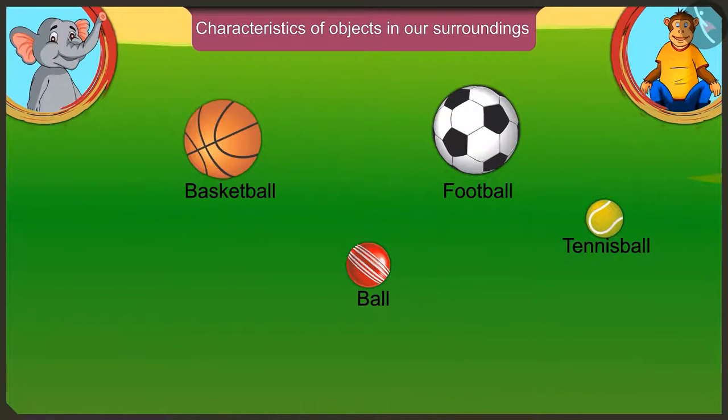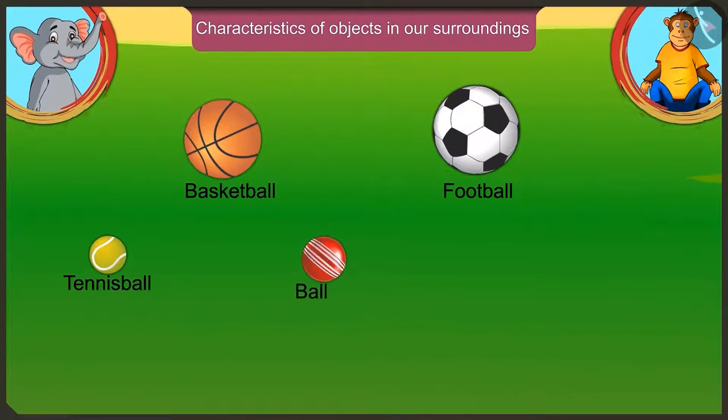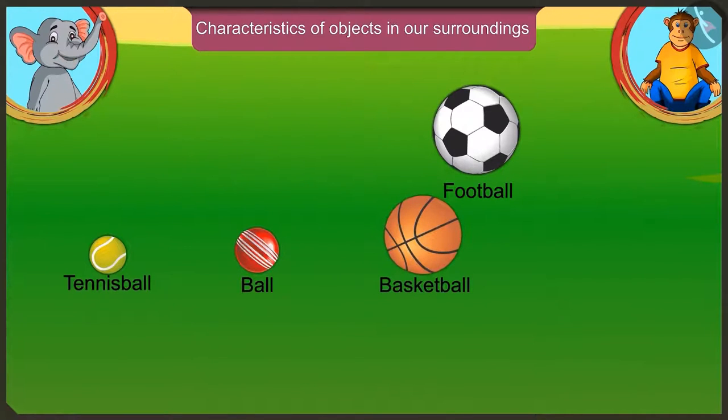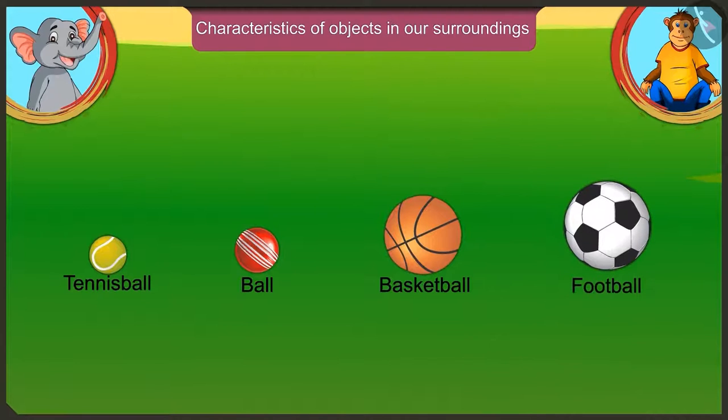Wow Appu! Now come on, just arrange these balls in the ascending order of their size. Here, according to their size, we first place the smallest tennis ball, then the ball bigger than that. Then basketball and finally we place the largest football. Well done Appu.